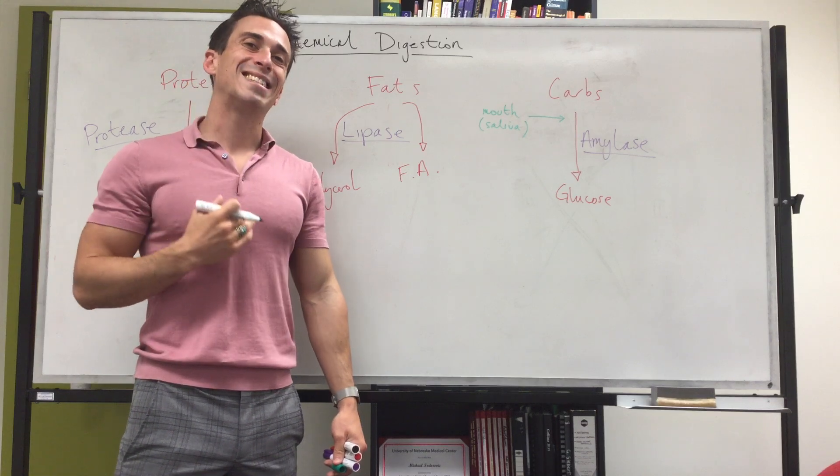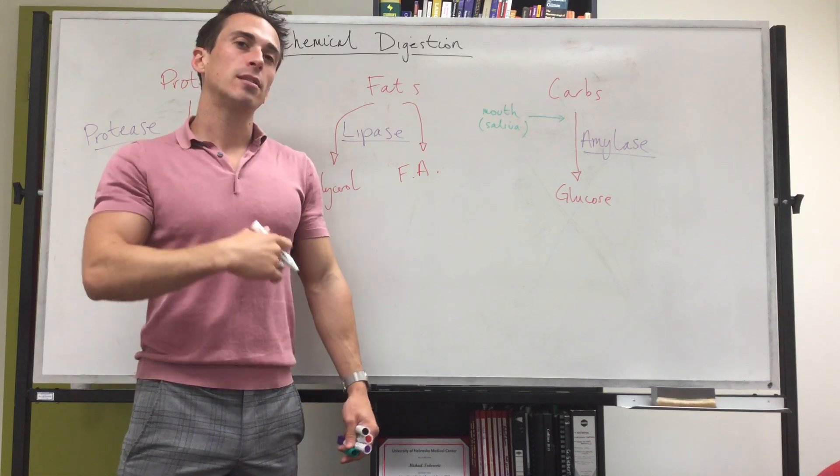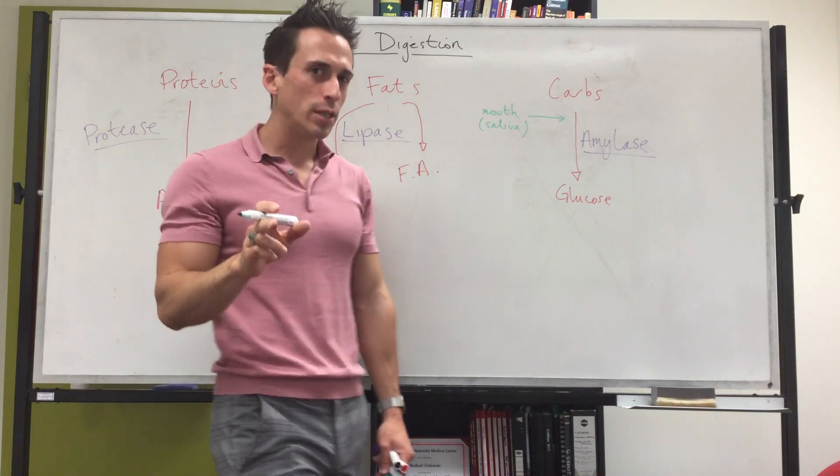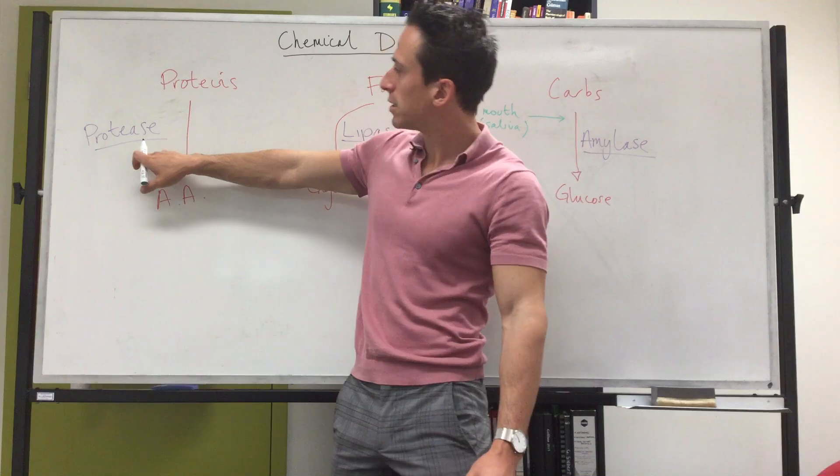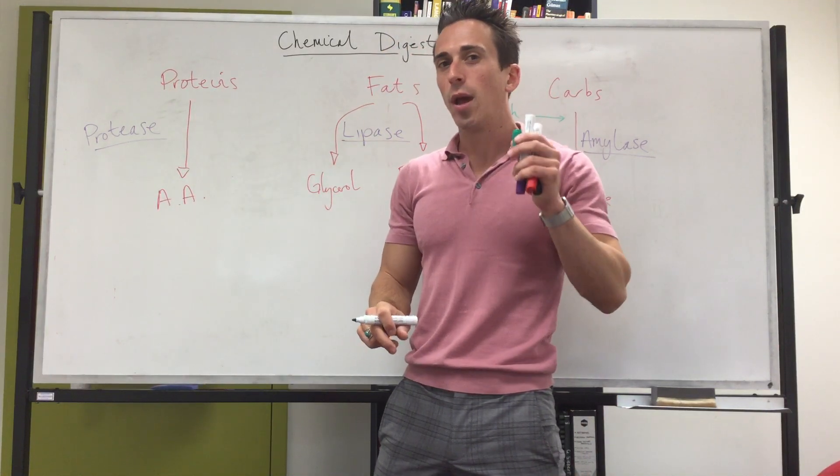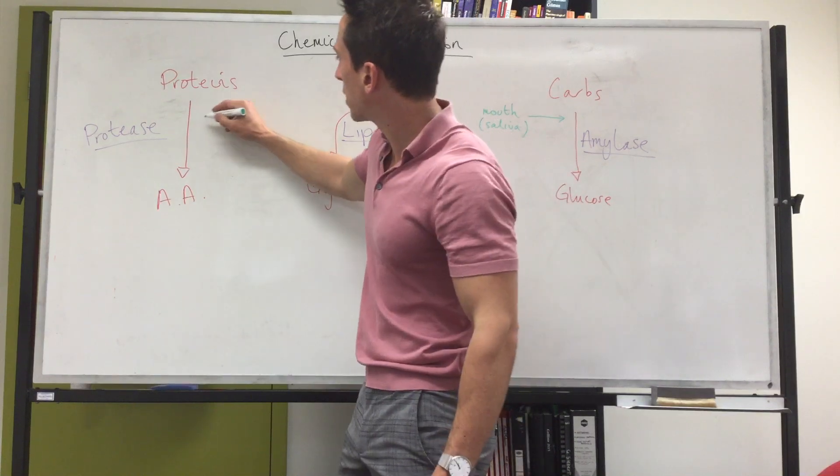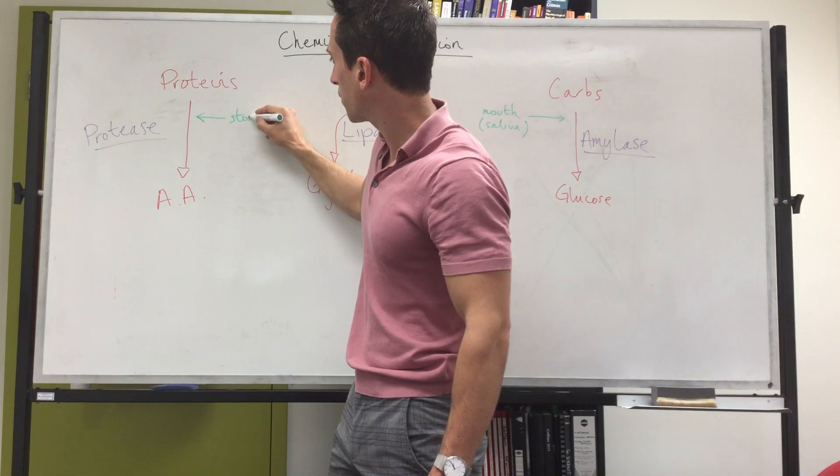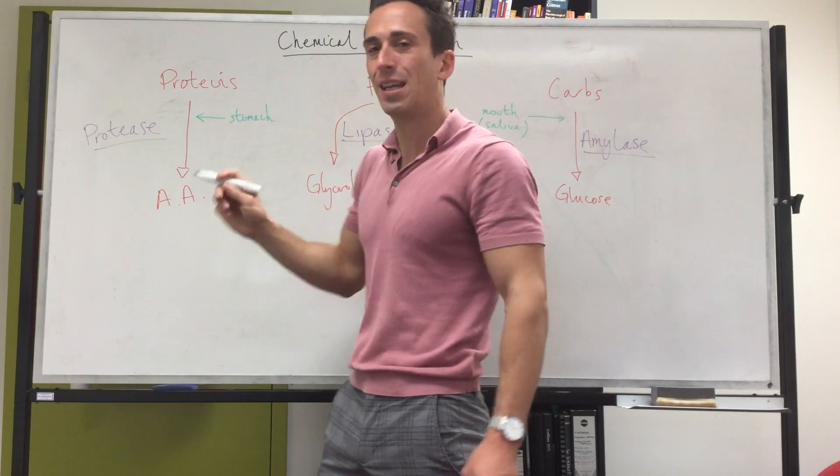Now as we get down into the stomach, the stomach starts to release some enzymes and these enzymes are proteases, so these enzymes are specific to break proteins to amino acids. The enzyme is called pepsin. So the stomach is actually the first site of protein digestion.